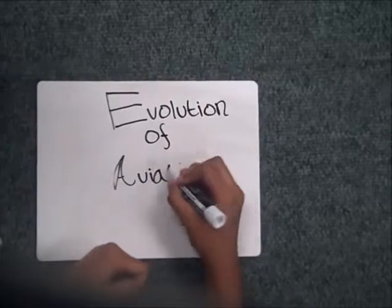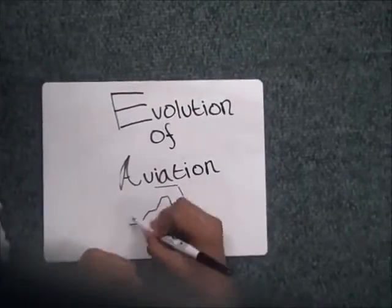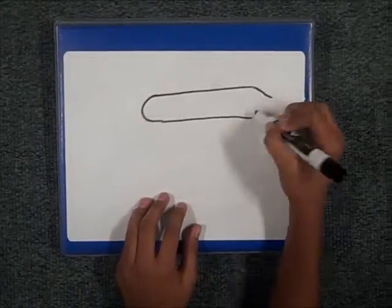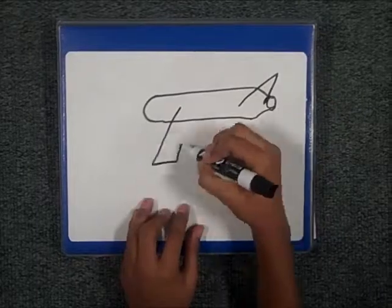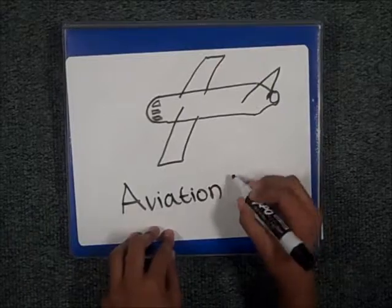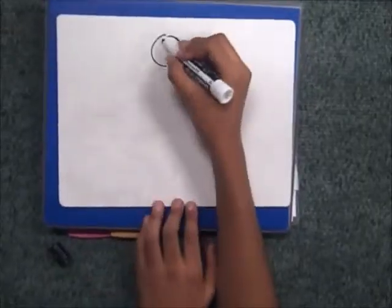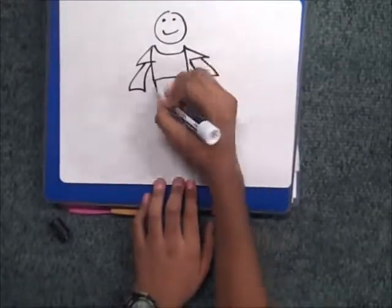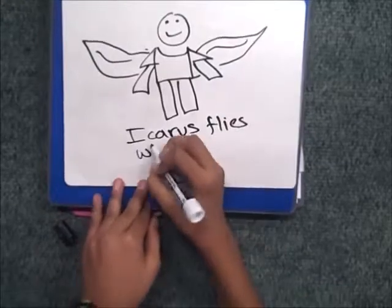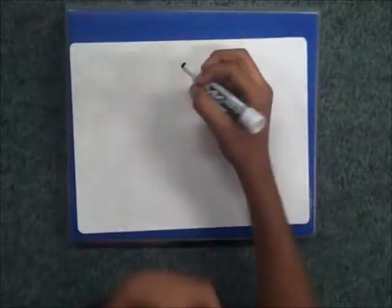Evolution of Aviation. Aviation begins. Icarus and Daedalus gave the idea of flight. Icarus was an architect who made himself wings.